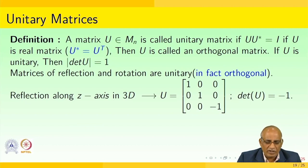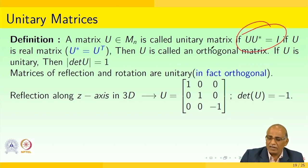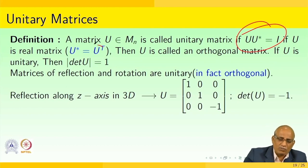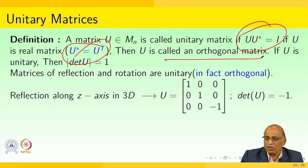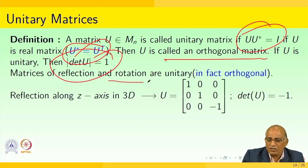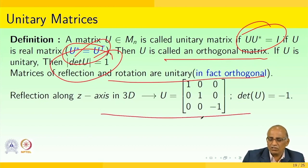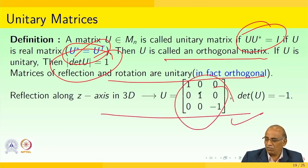Now we will look at unitary matrices. A matrix U ∈ Mₙ is called a unitary matrix if U·Uᵀ = I (the identity matrix). If U is a real matrix, then Uᵀ = U*, and U is called an orthogonal matrix. If U is unitary, then det(U) = 1. Matrices of reflection and rotation are unitary. Reflection in 3D gives a matrix like diag(1, 1, 1) with determinant equal to 1.